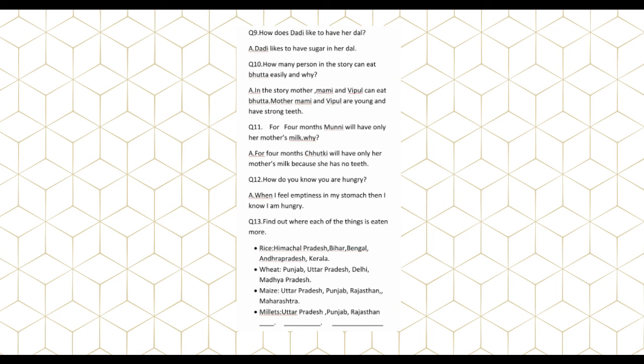Question number 13. Find out where each of the following things is eaten more. Rice: Himachal Pradesh, Bihar, Bengal, Andhra Pradesh, Kerala. Wheat: Punjab, Uttar Pradesh, Delhi, Madhya Pradesh. Maize: Uttar Pradesh, Punjab, Rajasthan, Maharashtra.